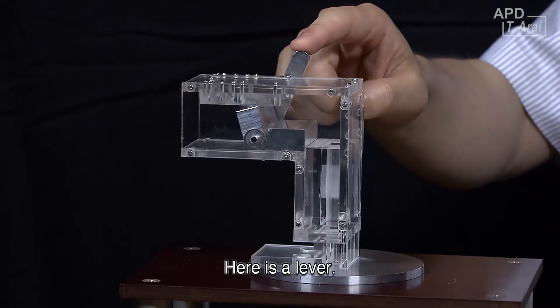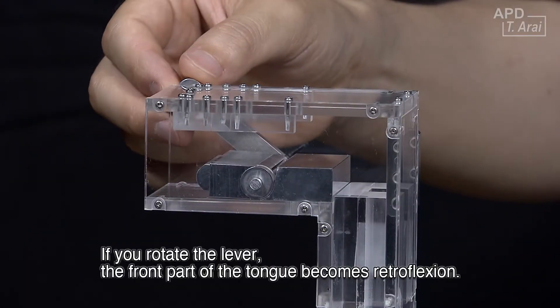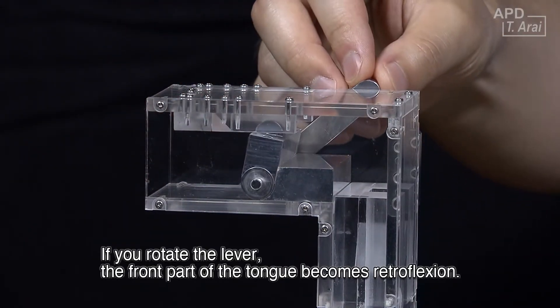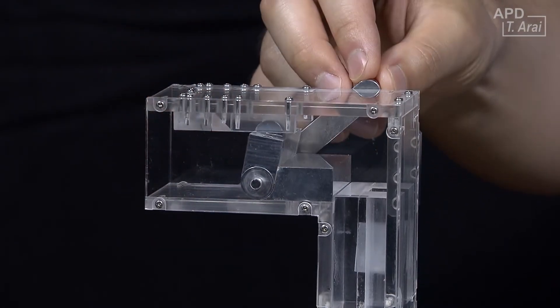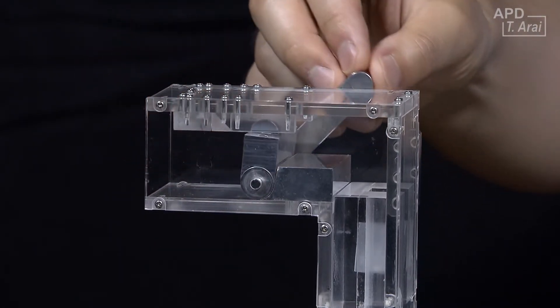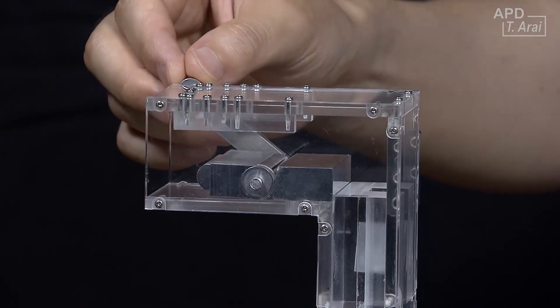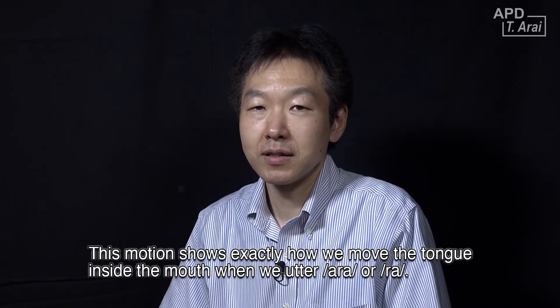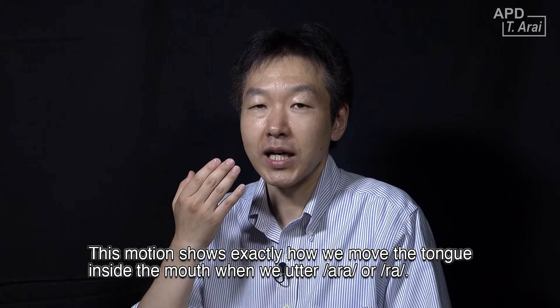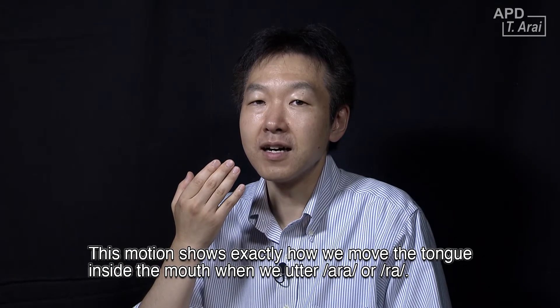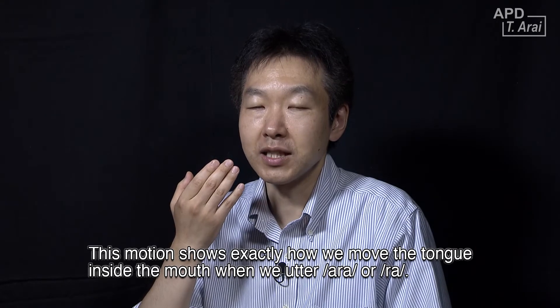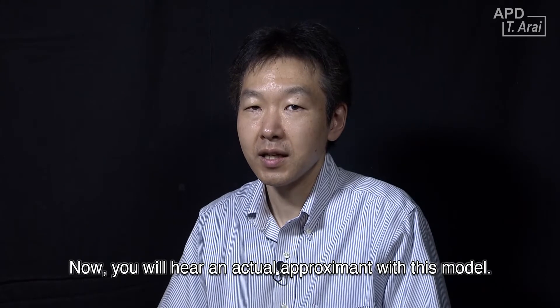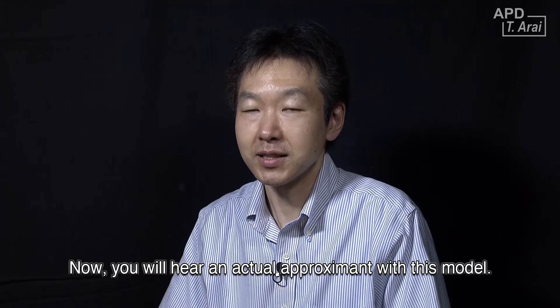Here is a lever. If you rotate the lever, the front part of the tongue becomes retroflexed. This motion shows exactly how we move the tongue inside the mouth when we utter RAH or RAH. Now you will hear the retroflex approximant with this model.